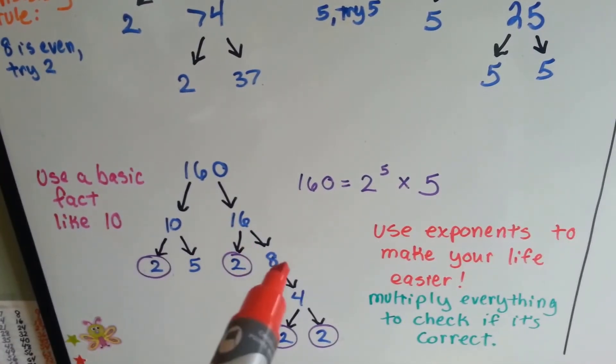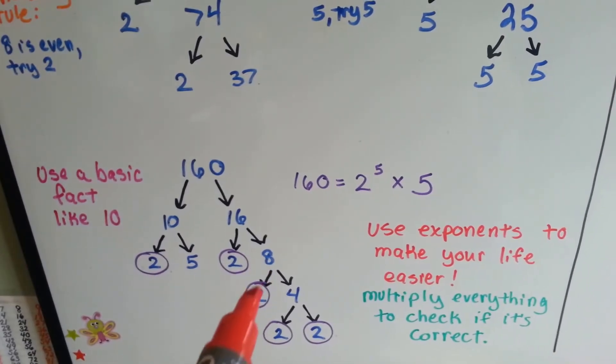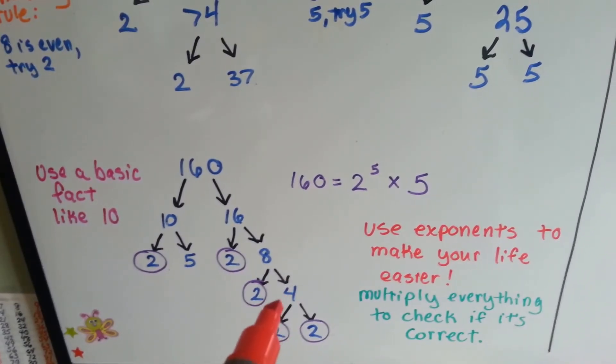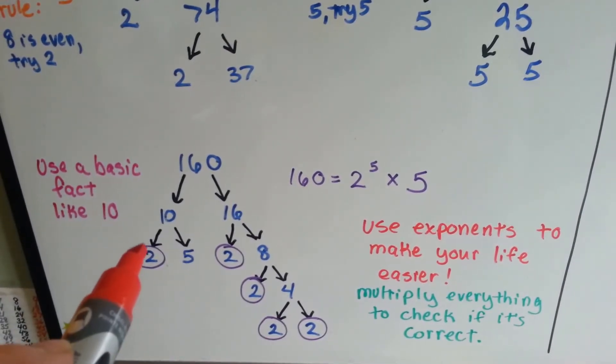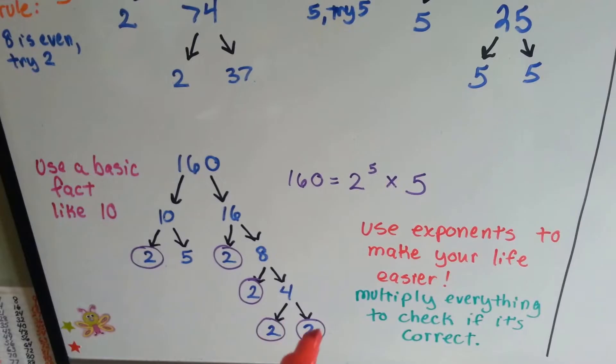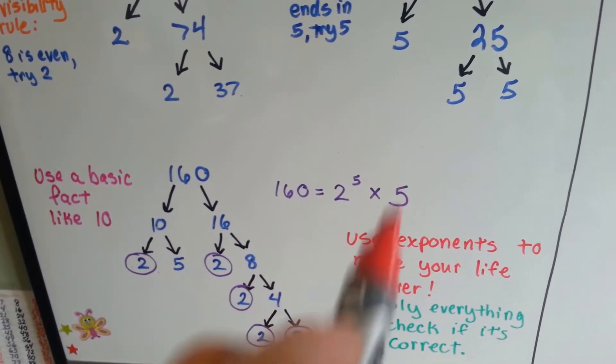What's 8 the product of? 2 and 4. We've got to break the 4 down. 2 times 2 is 4. Now we're done. Now we count up all the 2's. 1, 2, 3, 4, 5. And we have 2 to the 5th power and a 5. So it's 2 to the 5th power and a 5.